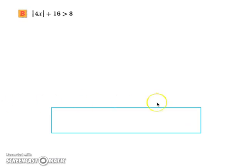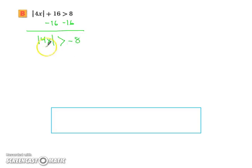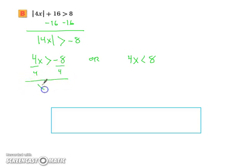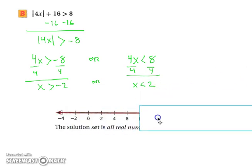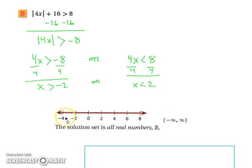For the next example, we first isolate the absolute value by subtracting 16 from both sides, giving the absolute value of 4x is greater than negative 8. We split into: 4x greater than negative 8 or 4x less than positive 8. Dividing both sides by 4 gives x greater than negative 2 or x less than 2. Graphing this, since every real number satisfies at least one condition, the solution is all real numbers.